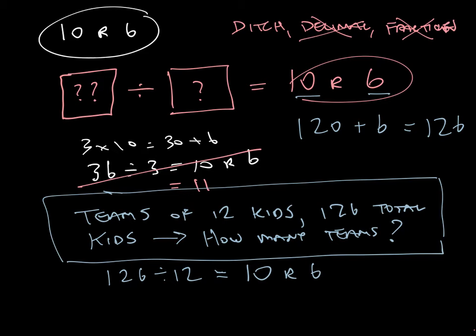Now I could take this remainder and I could make that 6 twelfths. I could make my remainder 0.5, so my answer could be 10.5 or a mixed number of 10 and 6 twelfths. But neither one of those really makes sense because I'm not going to have 10 and a half teams in a league, and I'm not going to have 10 and 6 twelfth teams. I'm going to have 10 whole teams and then I'd have to figure out what to do with that six.